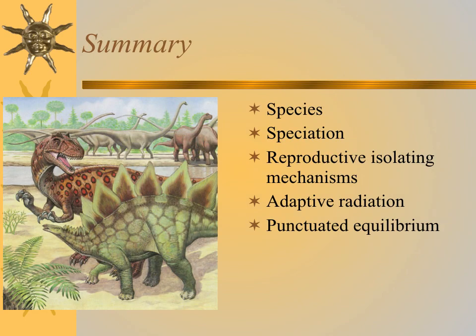To summarize: we talked about species — what is a species and how speciation occurs — and the key importance of reproductive isolating mechanisms. Geographic isolation is really important, but there are others as well. Speciation can occur gradually or rapidly depending on conditions, but when it occurs rapidly, it's often called punctuated equilibrium. Now we're going to talk about Mendel's genetics and combine that with evolution.